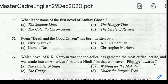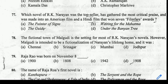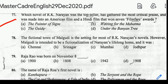Number 76: the poem 'Death and the Good Citizen' has been written by? Correct answer: option B, A.K. Ramanujan. Number 77: which novel of R.K. Narayan was the top seller, gathered the most critical praise, and was made into an American film and a Hindi film that won 7 Filmfare Awards? Correct answer: option C, The Guide.